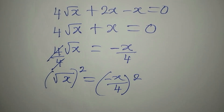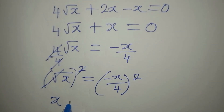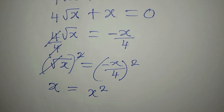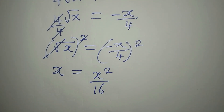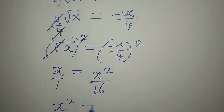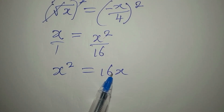Squaring both sides: x equals x squared over sixteen, since negative x squared turns positive and four squared is sixteen. Now we can cross multiply, giving us x squared times one equals 16x.